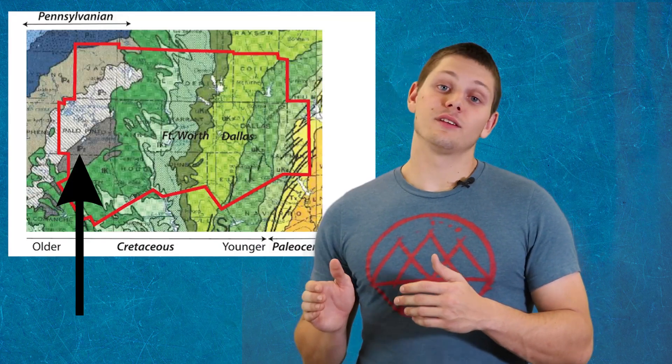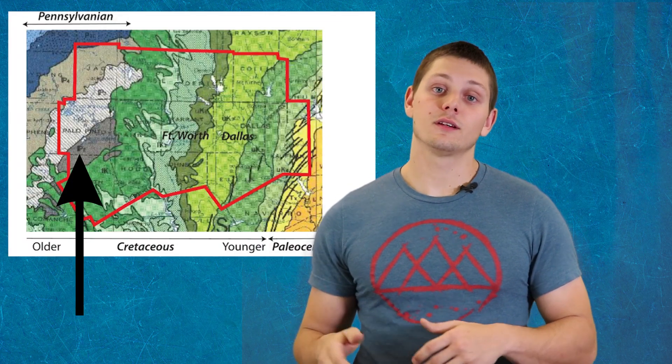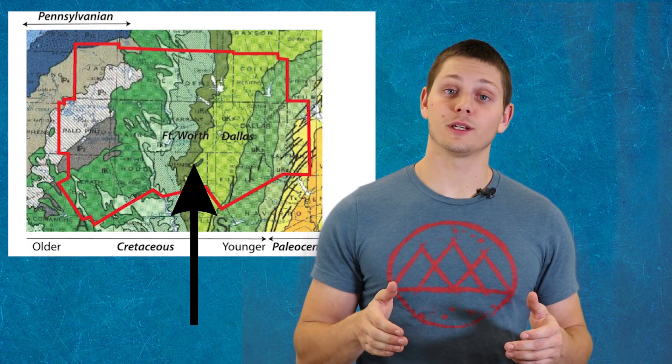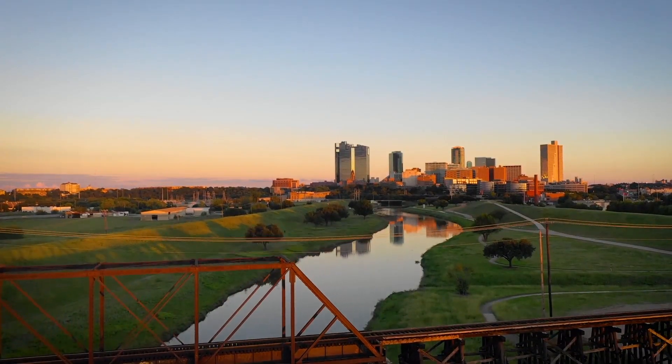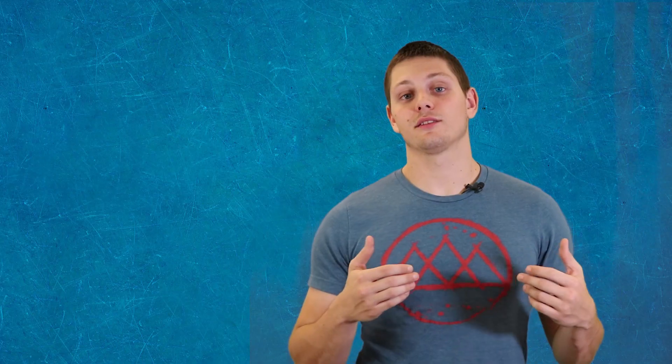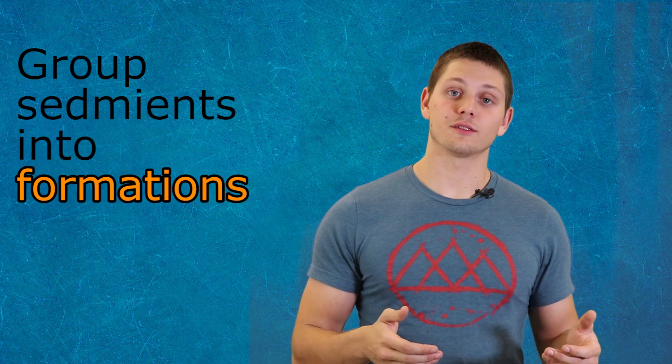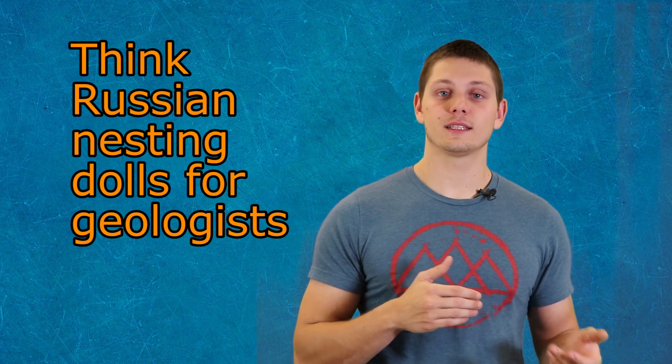To the west, we can see exposed Pennsylvanian sediments. In the center, Cretaceous sediments cover most of the Metroplex, and then fingers of Quaternary sediments are deposited along the banks of the Trinity River and its tributaries. Geoscientists group these sediments into formations based on time of deposition and type of rock. These formations are then put into groups to help make them easier to talk about and understand.